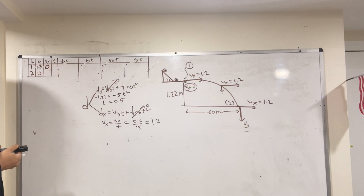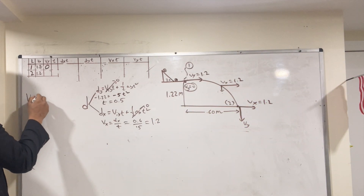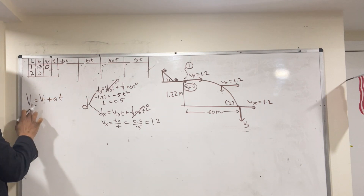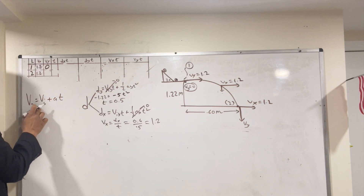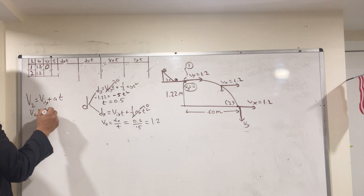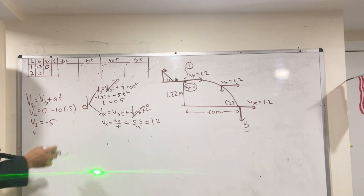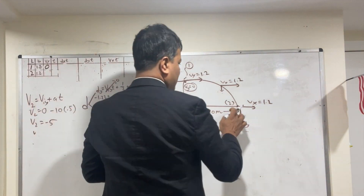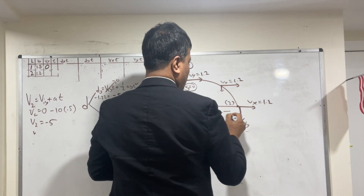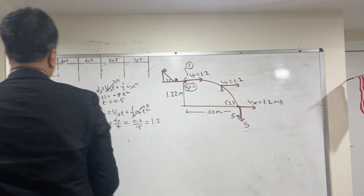Now let's find vy at location 2. Using vf = vi + a·t: vy = 0 + (−10)(0.5) = −5 m/s. This makes sense because vy has the largest arrow at location 2. So at location 2, vy = −5 m/s and vx = 1.2 m/s.